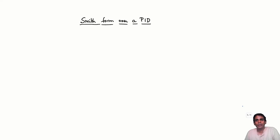In the last lecture we saw how to reduce any matrix whose entries are in a Euclidean domain to Smith form.